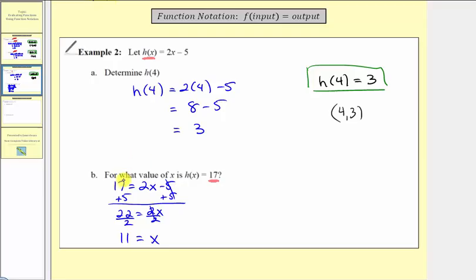So to answer the question, for what value of x is h(x) equal to 17? Our answer is x equals 11. What we discovered was that h(11) equals 17, and as an ordered pair, this would be 11 comma 17. It's important to make these connections.